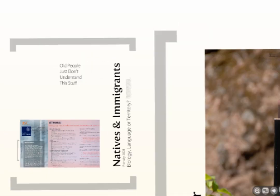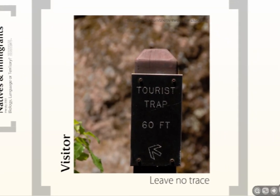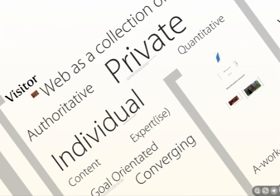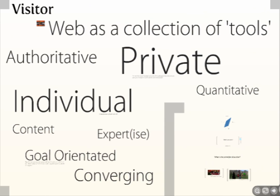The Visitor-Resident principle tries to tackle some of the same space as Natives and Immigrants, but uncoupled from the idea of age. To describe the visitor briefly: they go online, do what they need to do, come away again, and leave no trace. They have no social persona online. Keywords that describe the visitor: private, individual, goal-oriented.